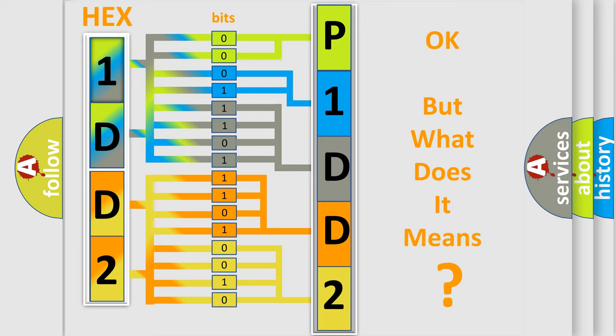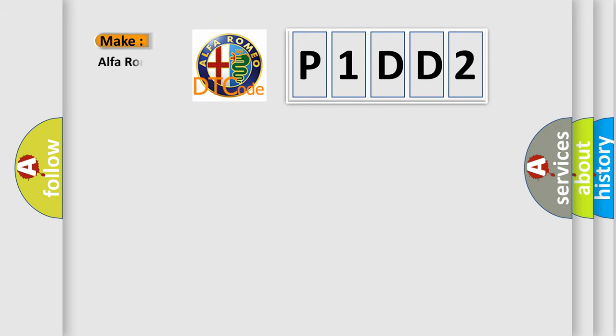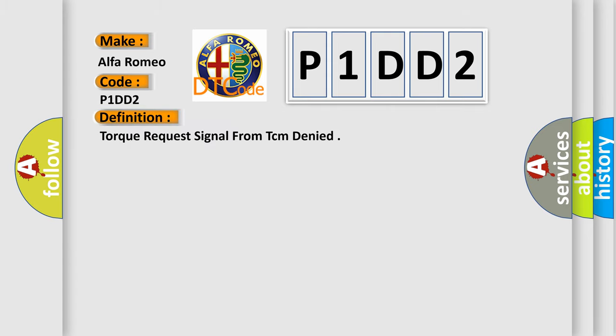We now know in what way the diagnostic tool translates the received information into a more comprehensible format. The number itself does not make sense to us if we cannot assign information about what it actually expresses. So, what does the diagnostic trouble code P1DD2 interpret specifically for Alfa Romeo car manufacturers? The basic definition is: Torque request signal from TCM denied.